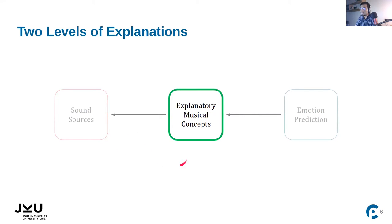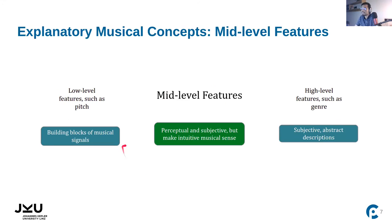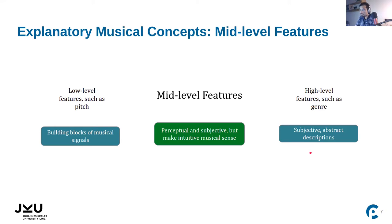Let us first look at explanatory musical concepts. Musical concepts can be arranged in a hierarchy: low-level features are the building blocks of musical signals, such as pitch, onsets, or beats; high-level features are subjective and abstract descriptions such as genre. Somewhere in between are mid-level features, which are perceptual and subjective qualities that also make intuitive musical sense.